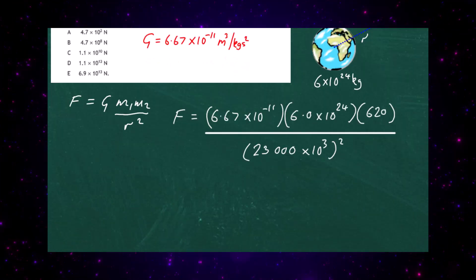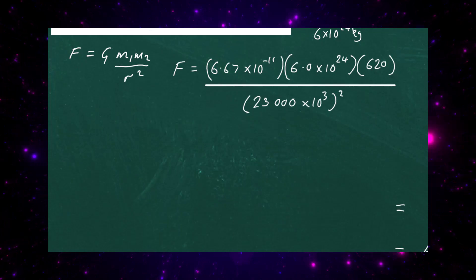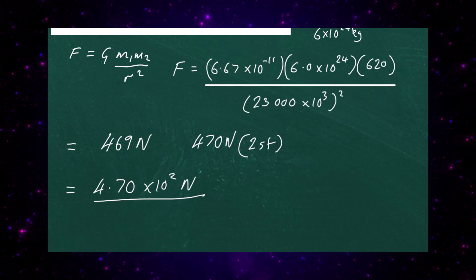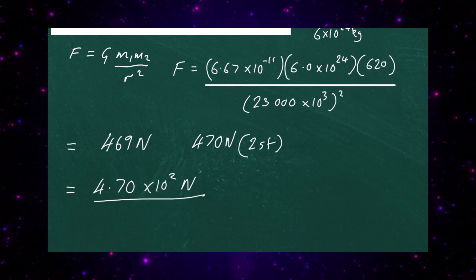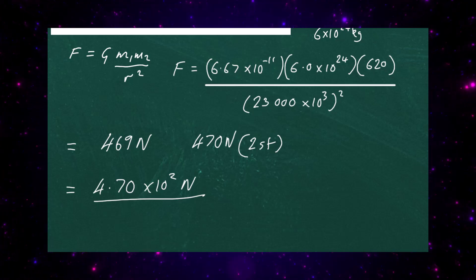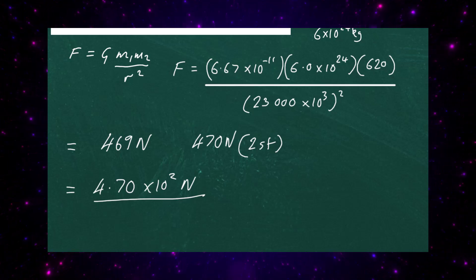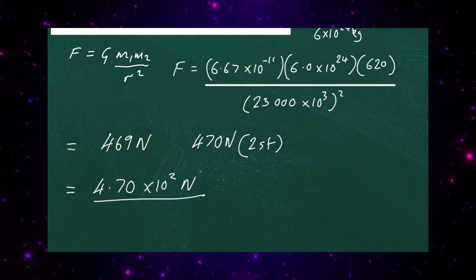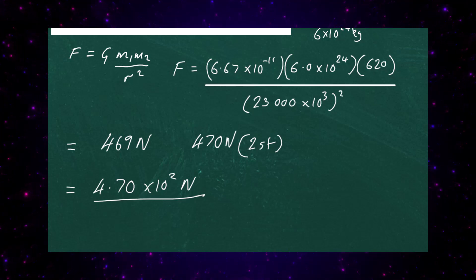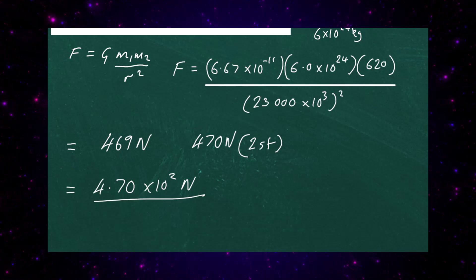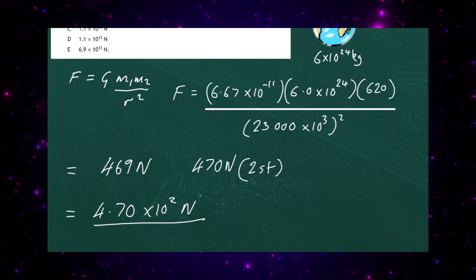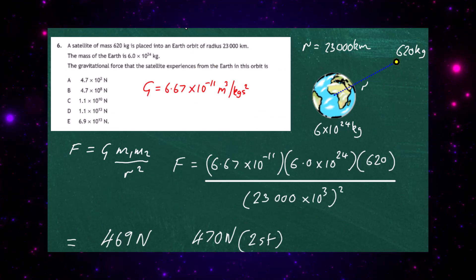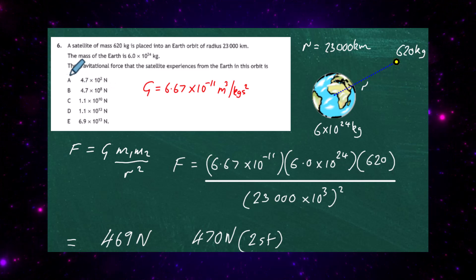Once we've done that part of the work, we just calculate the answer. We get the force of attraction between the two bodies as 469 N, which we round to two significant figures to give 470 N. In scientific notation that is 4.70 times 10 to the power of 2 N, and the answer in the scheme is A.